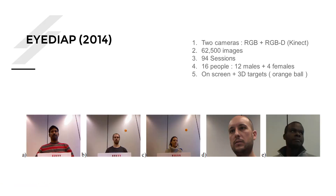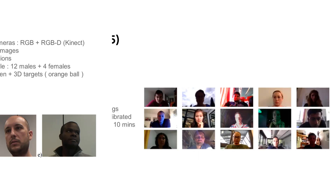In 2014, the EYEDIAP dataset was released using two cameras — an RGB camera and an RGBD depth camera. They gathered 62,500 images across 94 sessions with 16 people. Gaze was estimated in two ways: on-screen targets as described before, but also using a 3D orange ball. This shows the variety of techniques people try for creating gaze estimation ground truth.